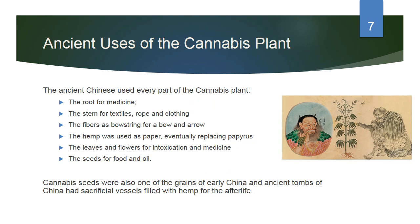The ancient Chinese used every part of the cannabis plant: the root for medicine, the stem for textiles, rope, and clothing. The fibers served as bowstrings for bows and arrows. Hemp was used as paper, eventually replacing papyrus. The leaves and flowers were used for intoxication and medicine, and the seeds for food and oil. Cannabis seeds were also one of the grains of early China, and ancient tombs had sacrificial vessels filled with hemp for the afterlife.